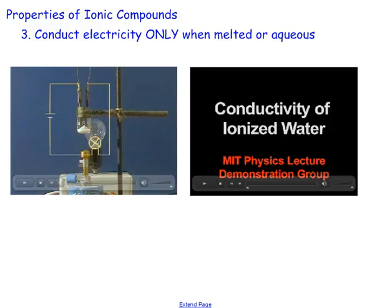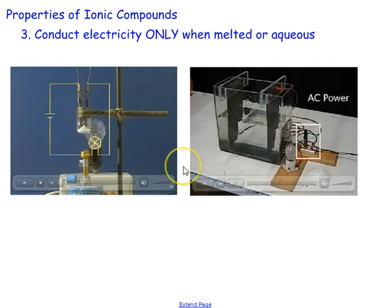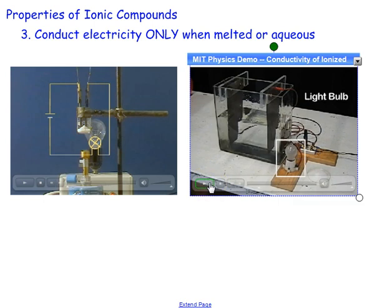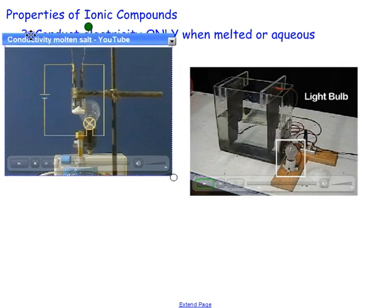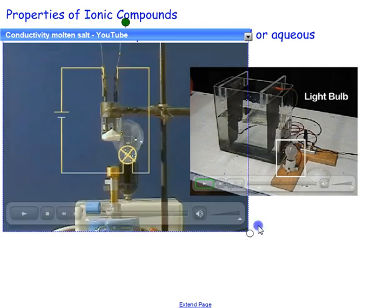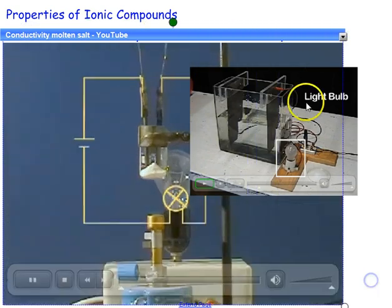Another property of ionic compounds is they'll conduct electricity only when they're melted or when they're aqueous, but never when they're solid. Here we're going to take a look at this first video. This is, we're going to take salt and we are going to melt it. We're going to melt this and watch the light bulb hopefully glow.